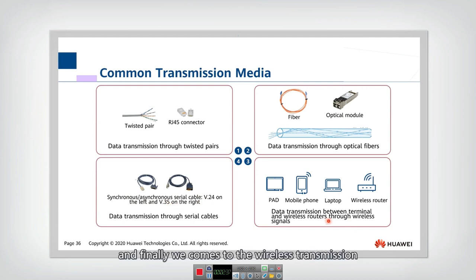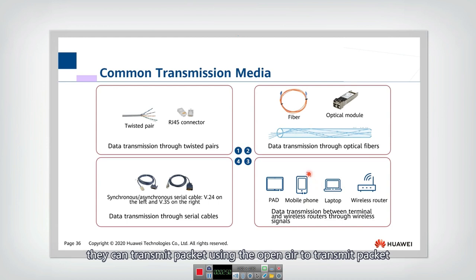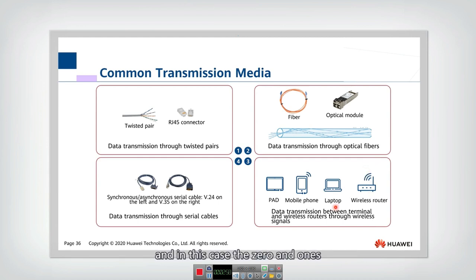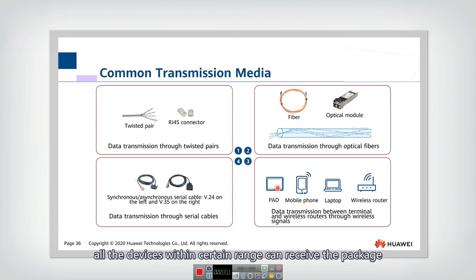Finally, we come to wireless transmission. Many mobile devices, for example mobile phones and laptops, also support wireless transmission. They can transmit and receive packets using open air to or from the wireless router. In this case, the zeros and ones are transmitted as electromagnetic signals. This kind of media is actually a broadcasting medium, so when you transmit one signal, all devices within a certain range can receive the packet.